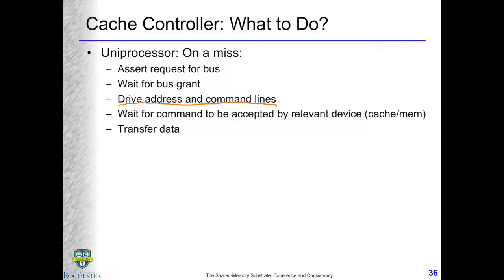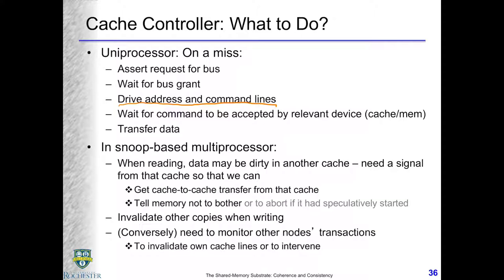Now in a snoop-based multiprocessor, the others on the bus are other processors. When I'm reading, data may be dirty in another cache, and I need to know that from this cache controller's perspective. We need a line to tell us whether it's dirty in another cache or not. If it is dirty in another cache, we need a cache-to-cache transfer from the owner of the dirty data.